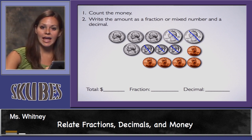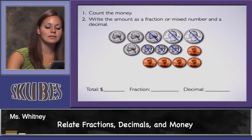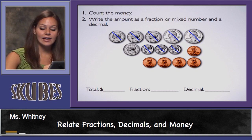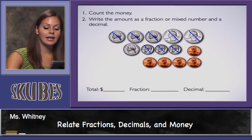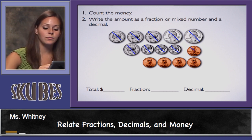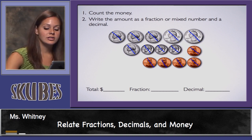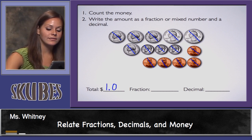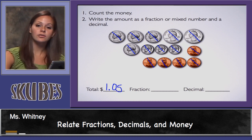Plus my nickels — I'll count by fives. I'm at 80 cents: 85 cents, 90 cents, 95 cents, and a dollar. Now I'll count my pennies. I have 1, 2, 3, 4, 5 pennies. So my total is 1 dollar and 5 cents.